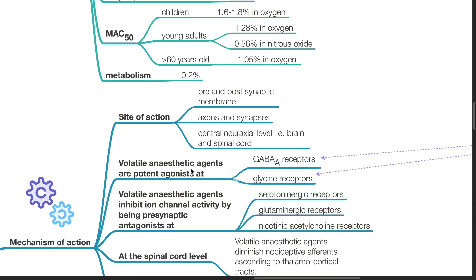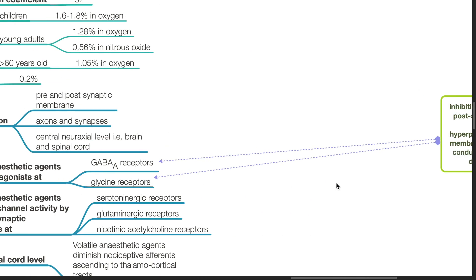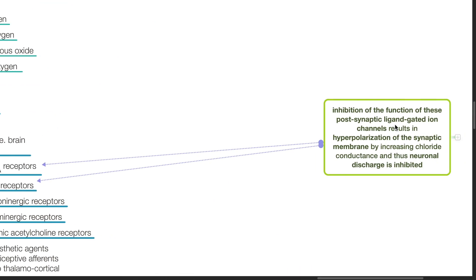Volatile anesthetic agents are potent agonists at GABA-A receptors and glycine receptors. Inhibition of the function of these postsynaptic ligand-gated ion channels results in hyperpolarization of the synaptic membrane by increasing chloride conductance and thus neuronal discharge is inhibited.